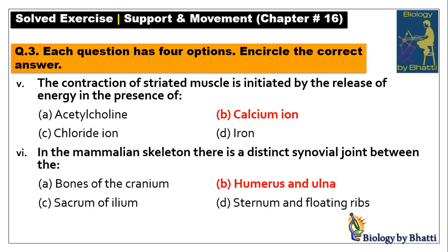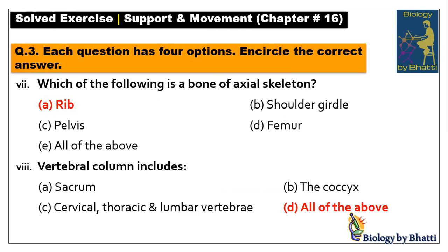Number five: contraction of striated muscle is initiated by the release of calcium ions — acetylcholine triggers the process but calcium initiates contraction. Number six: in the mammalian skeleton, a synovial joint exists between the humerus and the adjacent bone — answer is option B. Number seven: which of the following is a bone of the axial skeleton? Pelvic bones, femur, and shoulder girdle (pectoral girdle) are appendicular skeleton.